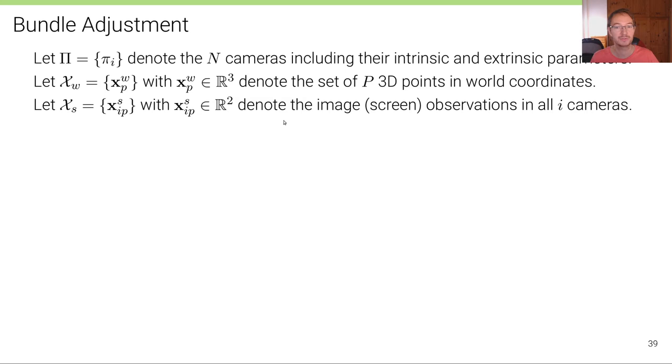Let further X_w denote the set of 3D points in world coordinates. And let X_s denote the corresponding image screen observations in all i cameras. Now, of course, not every 3D point is observed in every camera image, but we must observe at least some of the 3D points in multiple images in order to solve our SLAM problem.